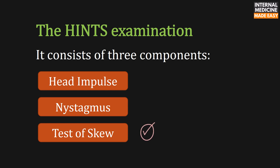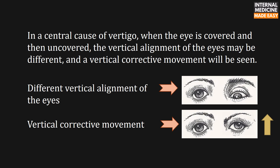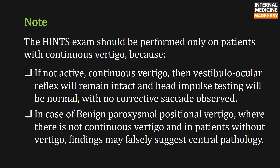To perform the test of skew, have the patient look at your nose, then cover one eye, then rapidly uncover the eye. In a central cause of vertigo, when the eye is covered and then uncovered, the vertical alignment of the eyes may be different and a vertical corrective movement will be seen. Note that the HINTS exam should be performed only in patients with continuous vertigo, because if vertigo is not active and continuous, the vestibulo-ocular reflex will remain intact, head impulse testing will be normal with no corrective saccade observed, and findings may falsely suggest central pathology in cases like benign paroxysmal positional vertigo.